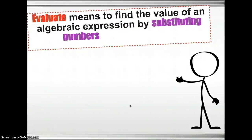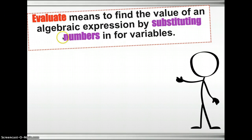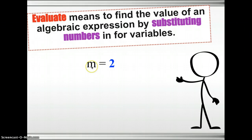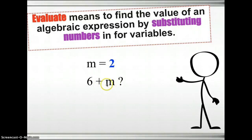We are now going to evaluate an algebraic expression. We evaluate algebraic expressions by substituting numbers or values in for your variables. For example, m is equal to 2 — we are saying that m is the same as 2, the value of m is 2. So for 6 plus m, we know that m is 2, so you just substitute or replace m by 2. So 6 plus 2 is 8.